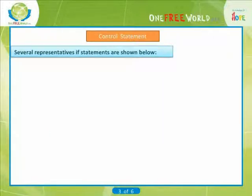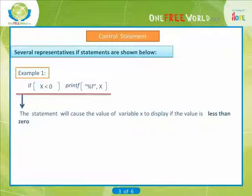Several representative if-statements are shown below. Example 1: if (x < 0) printf("%f", x). The first statement causes the value of the floating point variable x to be printed if its value is less than zero.